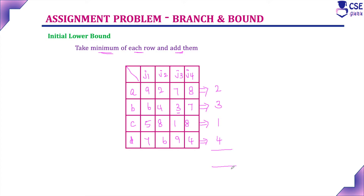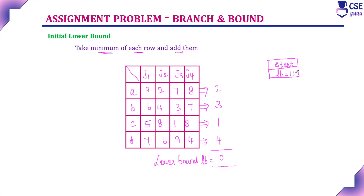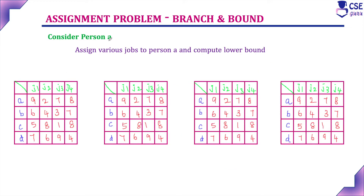Adding these row minimums gives us the initial lower bound value of 10. This is the initial state space tree at level 0, with LB = 10. The second step is to consider person A — assign various jobs to person A and compute the lower bound value for each assignment.